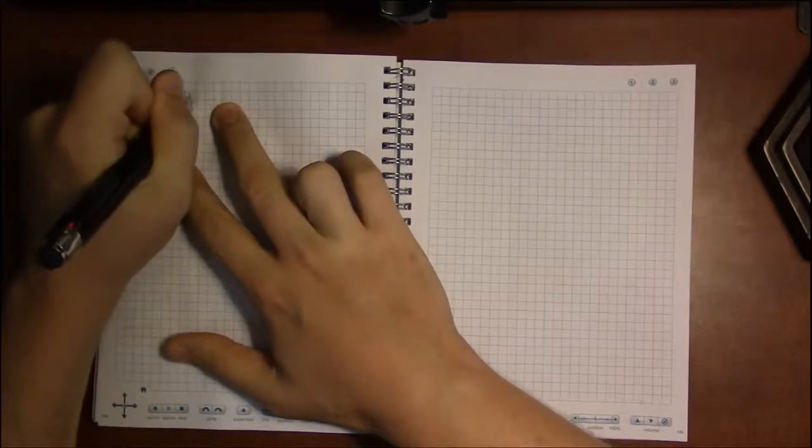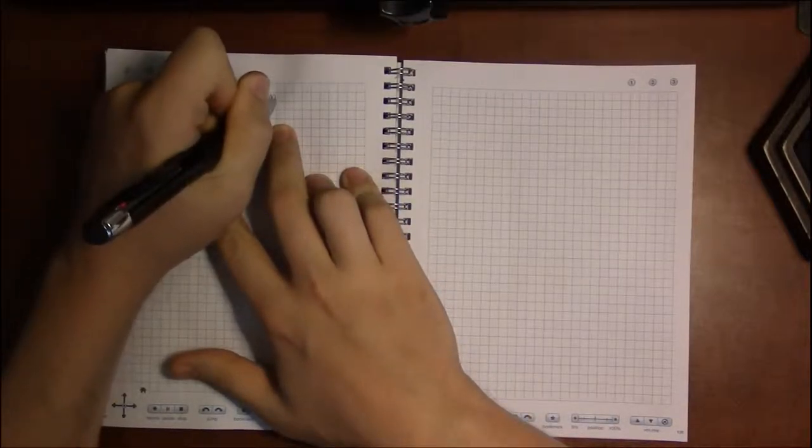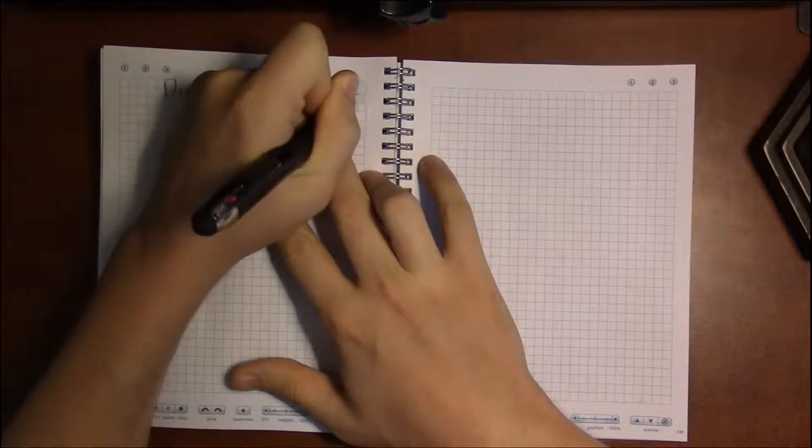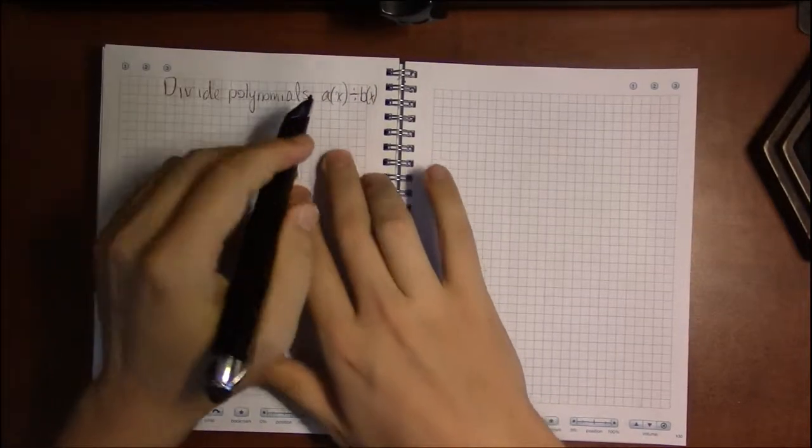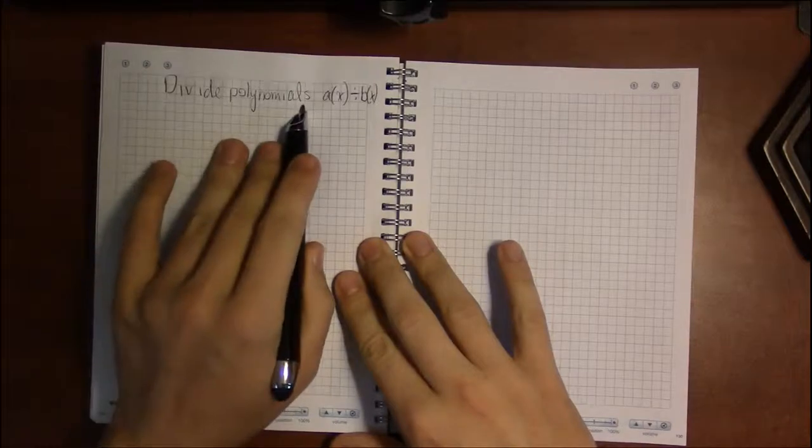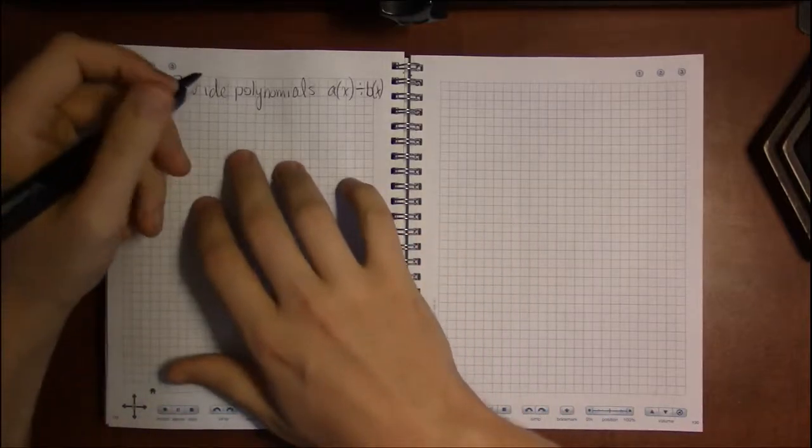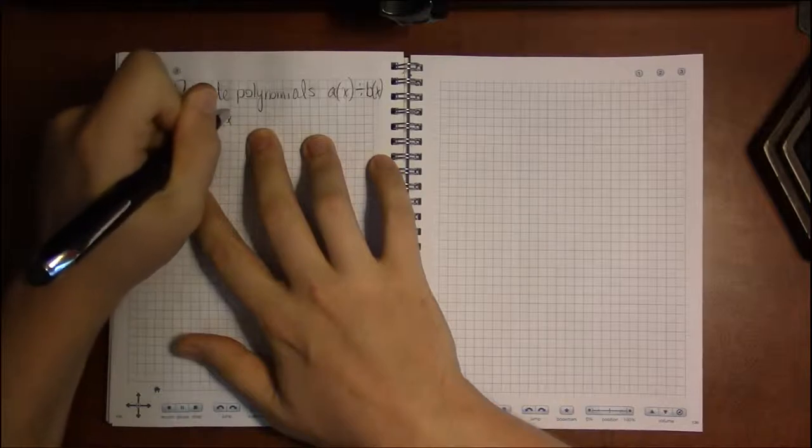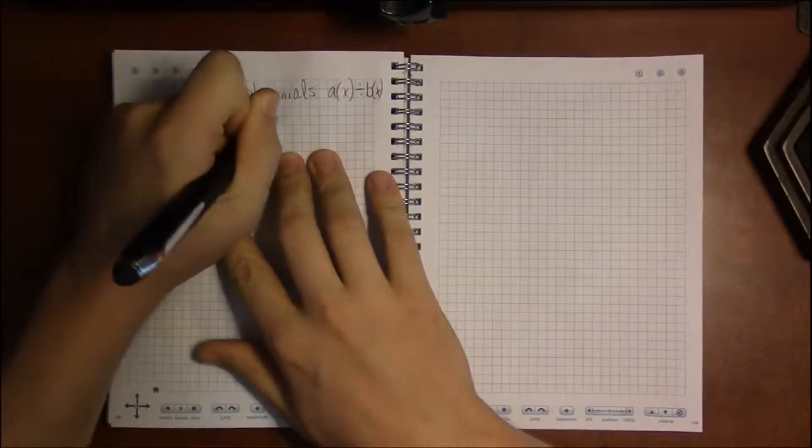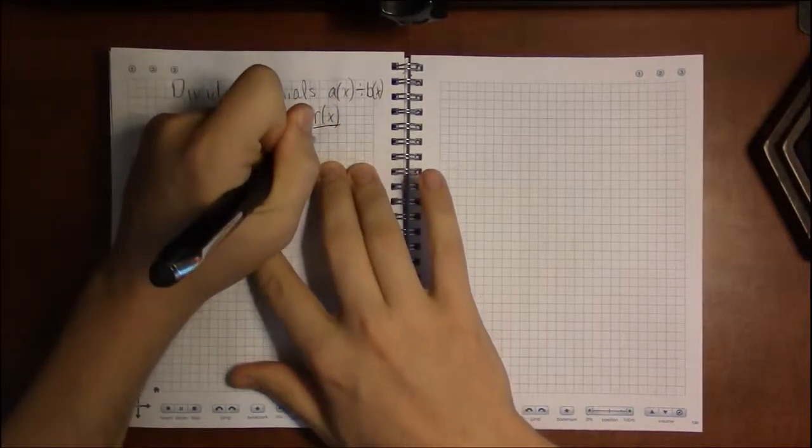So if we divide two polynomials, say A of X and B of X, hearkening back to A divided by B, it's just now we've got some variable over which A and B are polynomials. We're going to have quotients and remainders here. A of X over B of X is going to be some quotient polynomial plus a remainder polynomial divided by the denominator.